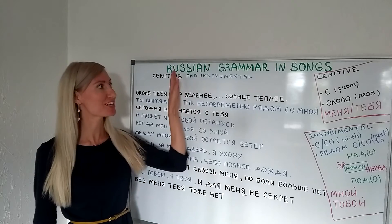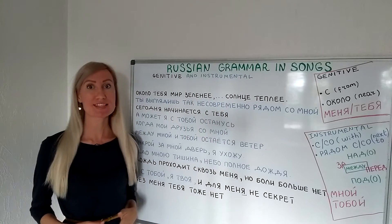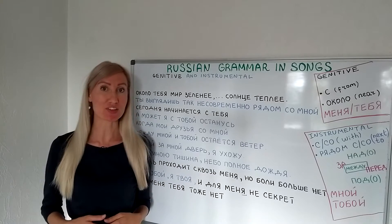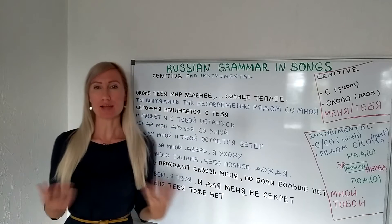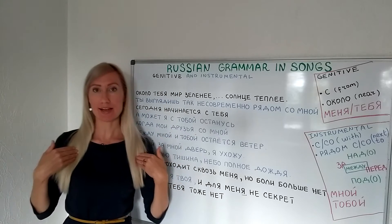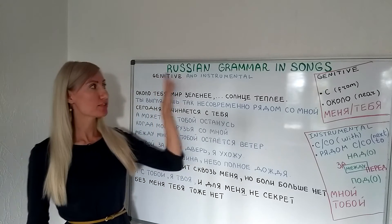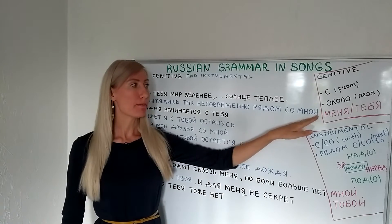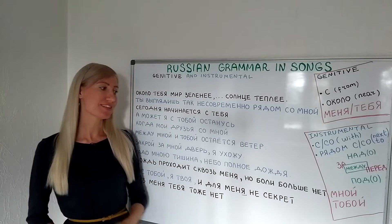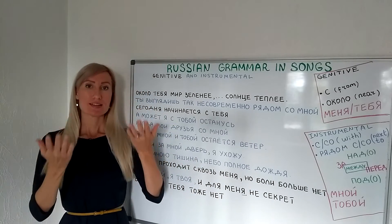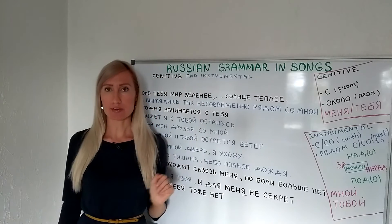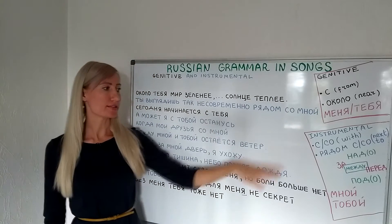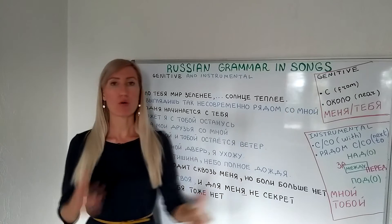Hey guys and welcome to Russian Grammar in Sounds, where we look at a certain aspect of Russian grammar by analyzing the lyrics of popular Russian or Soviet songs. Today I chose for you the lines where pronouns 'я' and 'ты' are used in the genitive or instrumental case. In the genitive case it will be 'меня' and 'тебя', and in the instrumental 'мной' and 'тобой'. We are taking these cases together because they are used with the same preposition 'с' and in the same meaning of being nearby.